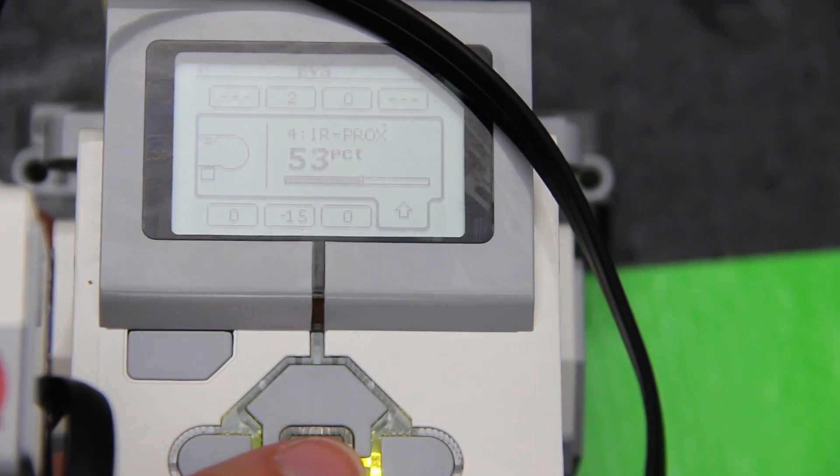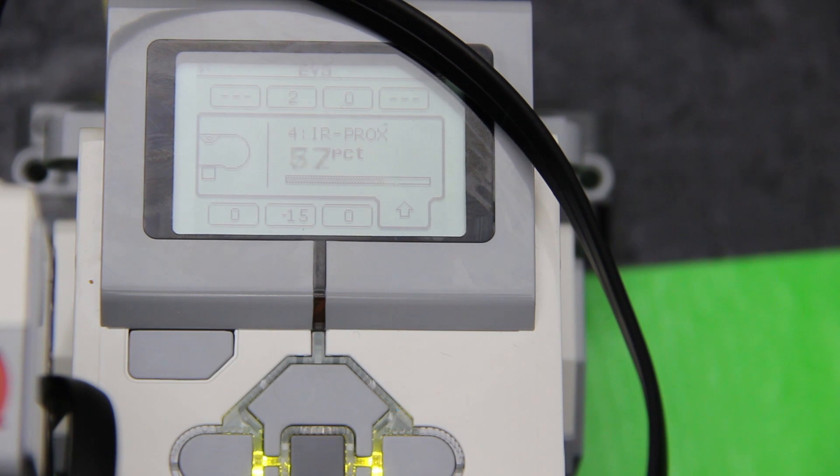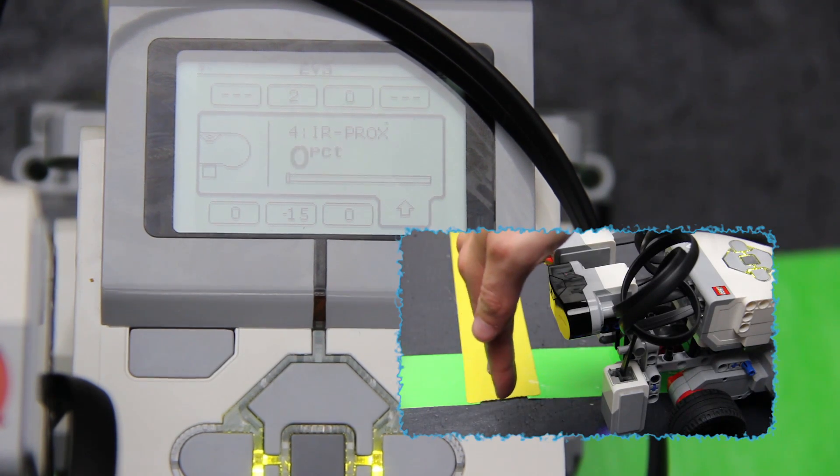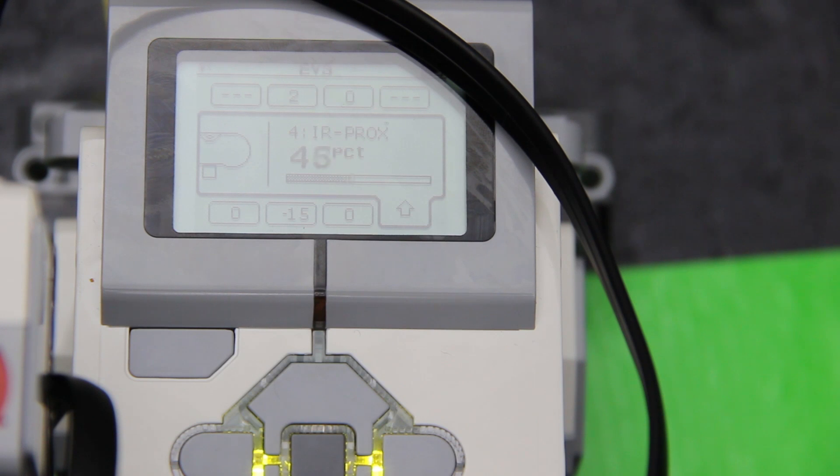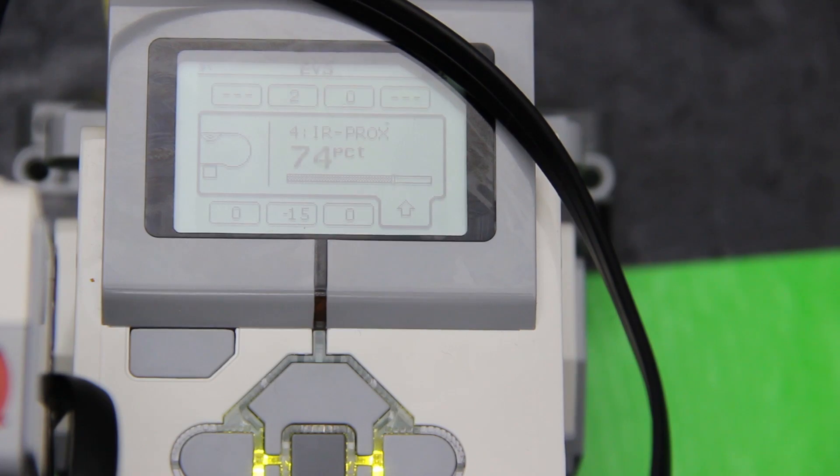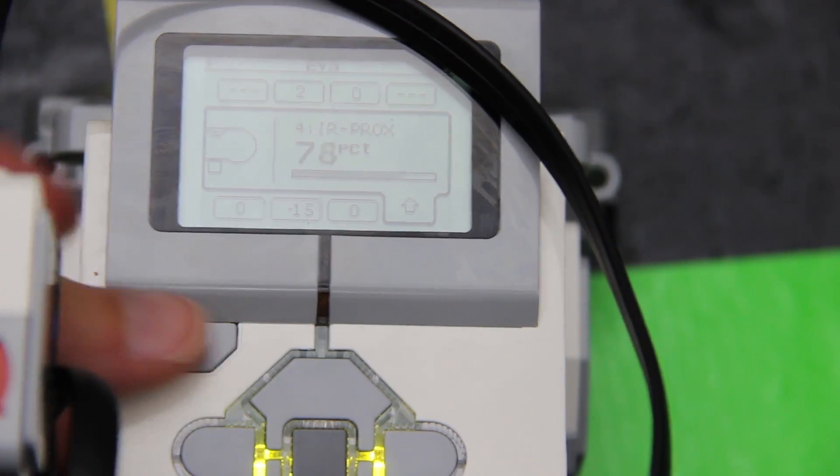In port 4 we have something called an IR sensor. So as I move my hand towards and away you can see that the distance, the proximity sensor, is changing. As I get closer it's reducing. So those are the four big sensors you're going to be able to use.